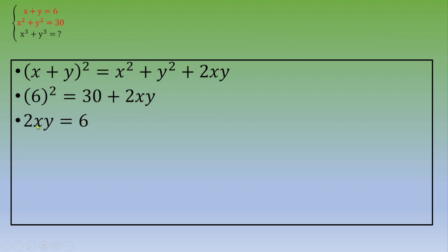So 6 squared equals 30 plus 2xy. If you do the math, you've got 2xy equals 36 minus 30. This is equal to 6. So the value of xy is 3.